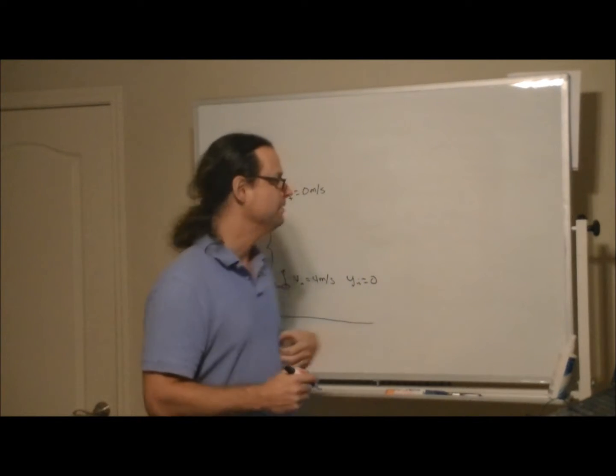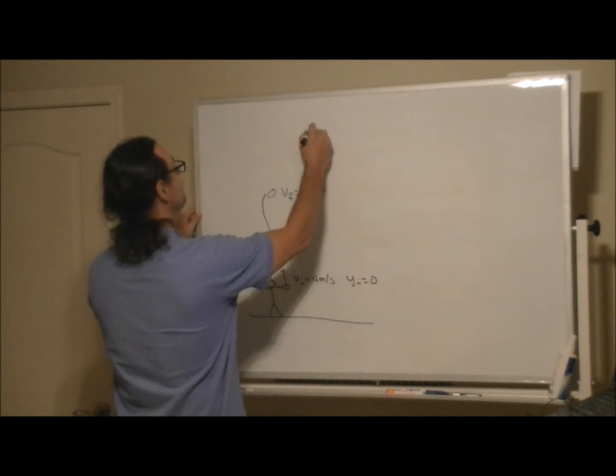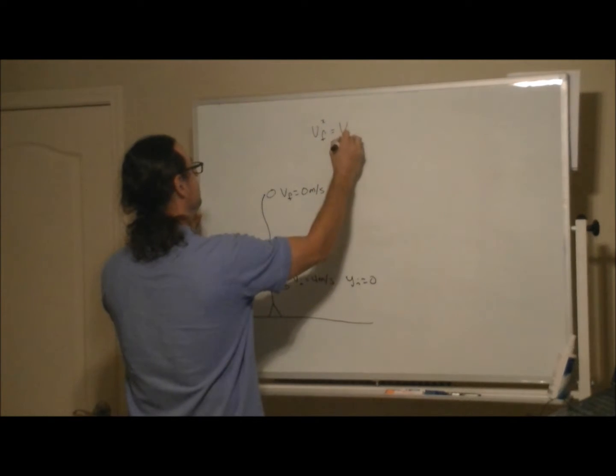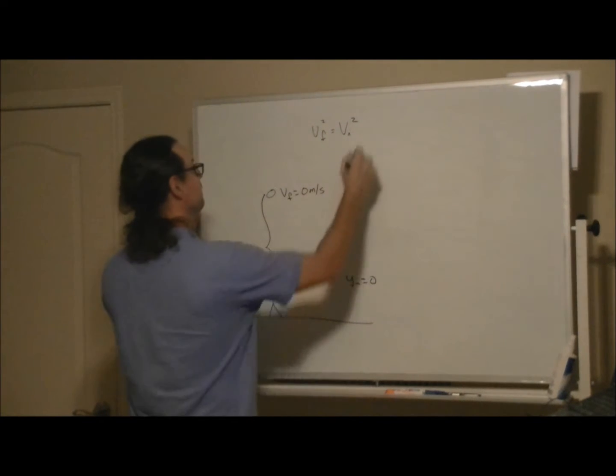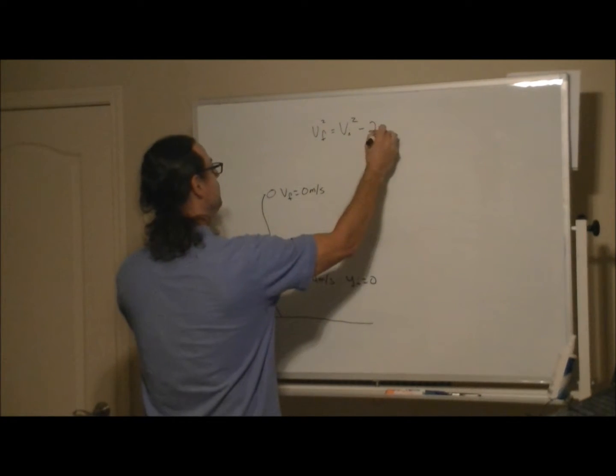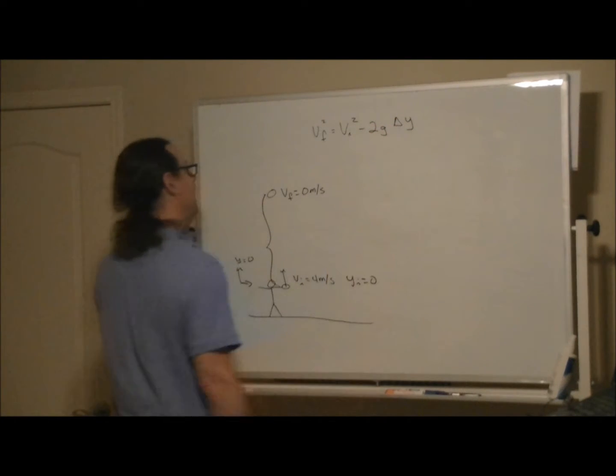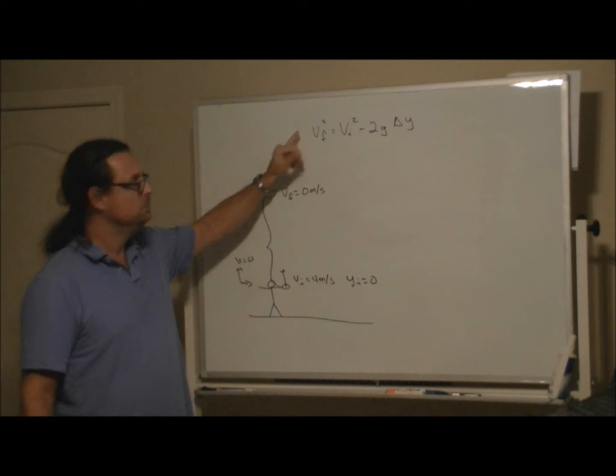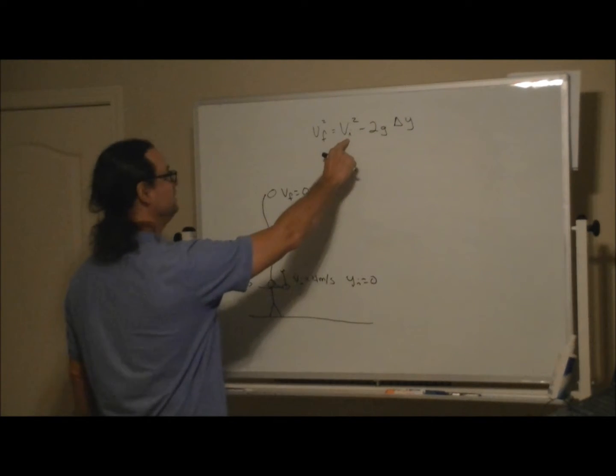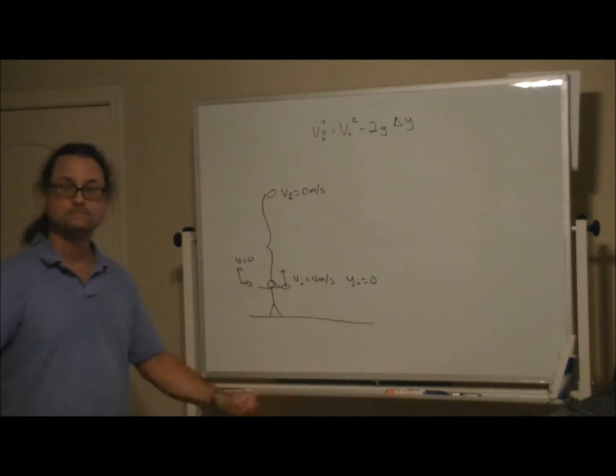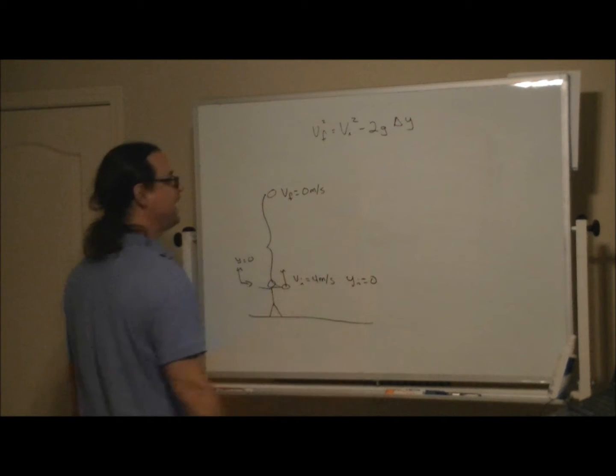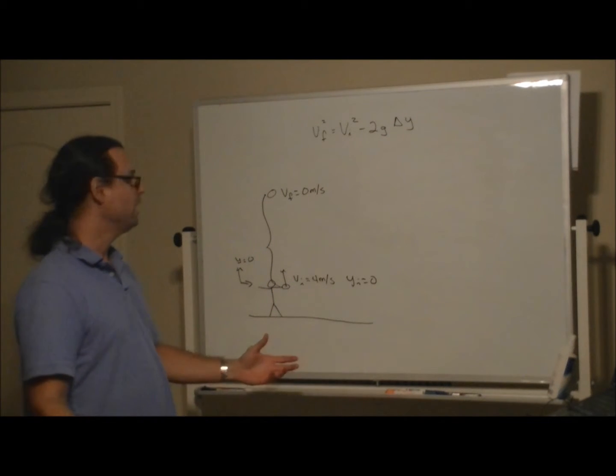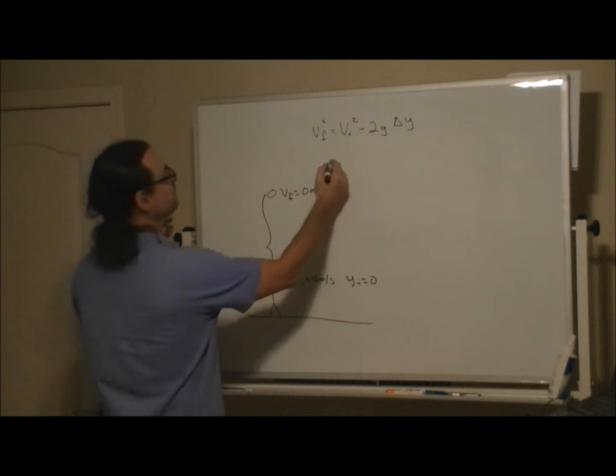We have v final squared equals v initial squared minus 2g delta y. If you look at this, you realize there's no time in it. You have the initial velocity, you have the final velocity, g is just the acceleration of gravity, 9.8 meters per second squared, and delta y is that answer that you want—it's the maximum displacement. In this case, you would solve it.